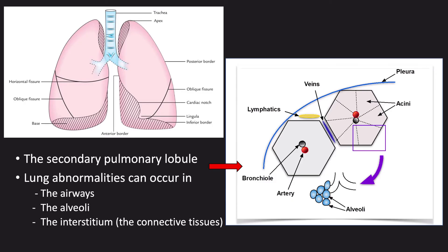The lungs are composed of lobes: three on the right — upper, middle and lower — and two on the left — upper and lower. The upper and lower lobes are divided by the oblique fissure, and the middle lobe is separated from the right upper lobe by the horizontal fissure. The lungs are composed of alveoli, the air sacs where gaseous exchange takes place, supplied by small airways called bronchioles. At a microscopic level, the alveoli are grouped into units called acini and bound by connective tissue called the interstitium. The pulmonary veins and lymphatics run within this interstitium.